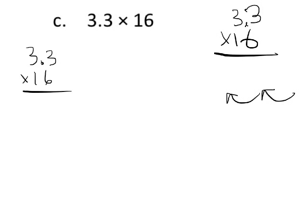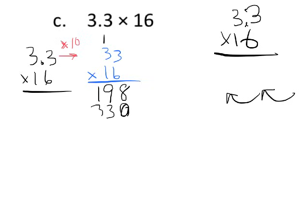So we're going to start with 3.3 times 16. But really, I'm going to multiply this guy by 10. And that's going to give me 33 times 16. Now I'm going to multiply 33 times 16 instead of 3.3 times 16. So when I multiply, 6 times 3 is 18, carry the 1. 6 times 3 is 18, plus 1 is 19. That's a 1. It's not really a 1, it's a 10. So we know it's going to end in 0. So 1 times 3 is 3. 1 times 3 is 3. We add.